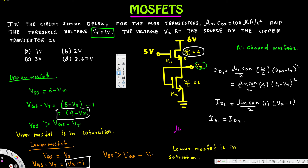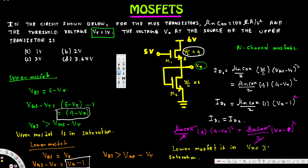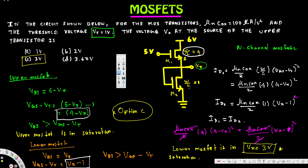Equating the two expressions: (μnCox / 2) × 4 × (4 minus Vx)² = (μnCox / 2) × 1 × (Vx minus 1)². The μnCox over 2 terms cancel on both sides. Solving for Vx gives Vx equal to 3 volts. The correct answer is option C.